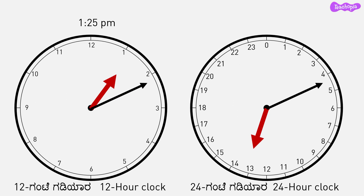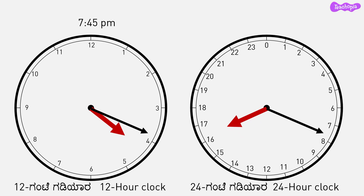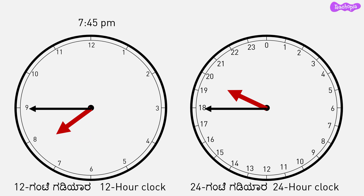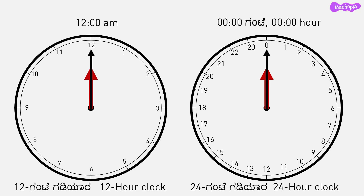1:25 p.m. will be 13:25 hours — it is 1 hour 25 minutes more than 12. 7:45 p.m. will be 19:45 hours — it is 7 hours 45 minutes more than 12. 11:59 p.m. will be 23:59 hours — it is 11 hours 59 minutes more than 12. 12 a.m. will be 0 hours.